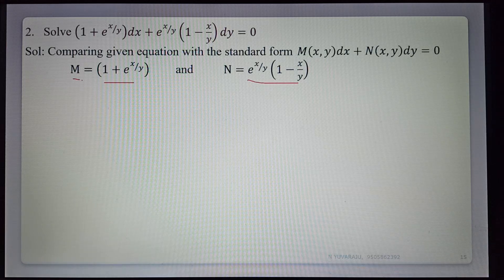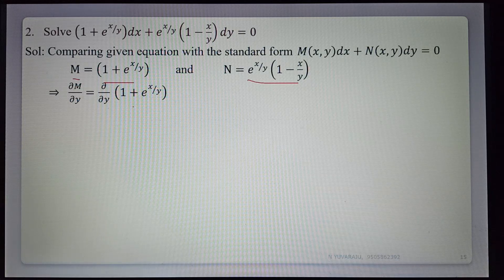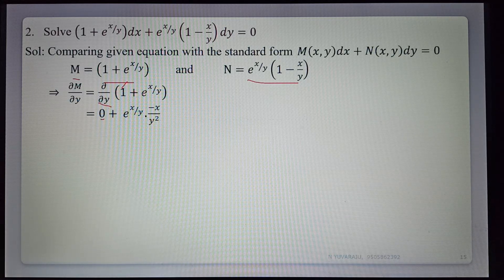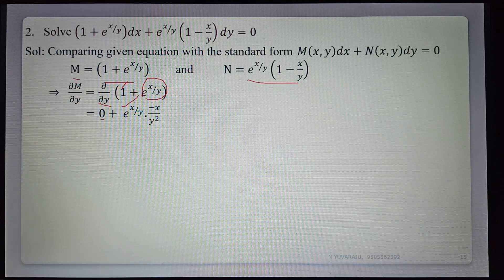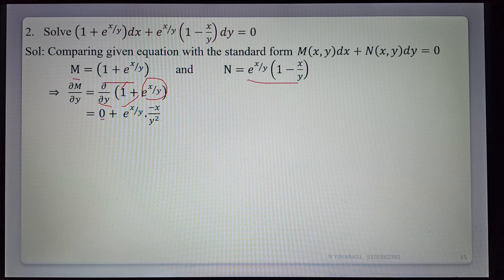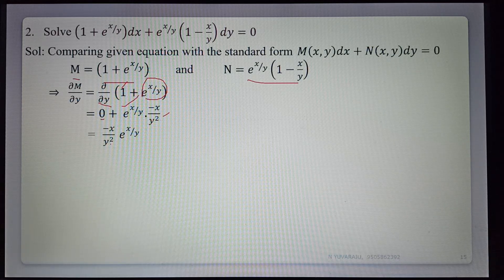Finding ∂M/∂y: differentiating 1 plus e^(x/y) with respect to y. Derivative of 1 is 0. For e^(x/y), the derivative is e^(x/y) times derivative of x/y with respect to y. Since x is constant, derivative of 1/y is minus 1/y². So ∂M/∂y equals minus x/y² times e^(x/y).